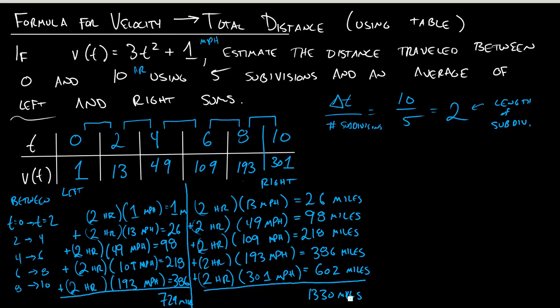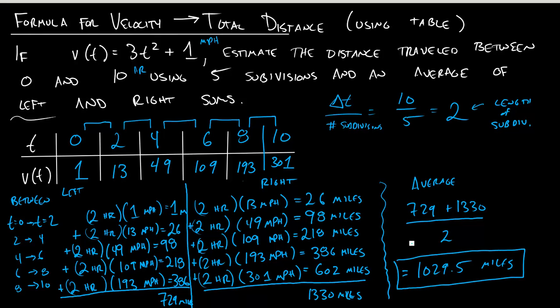And so what these problems will often ask you to do, which is what this one asks you to do, is it asks you to take an average of these left and right sums. So my average in this case will just be the average of the total. So 729 plus 1330 divided by 2 will give you an estimate of 1029.5 miles. And so just to recap, what we've done is we've taken an equation about our velocity over 10 hours, and we've estimated that we traveled this many miles during those 10 hours if this was our velocity.